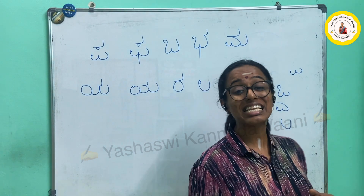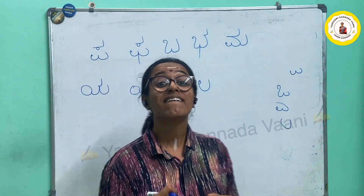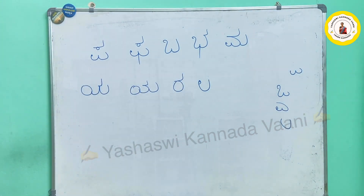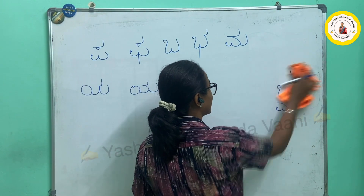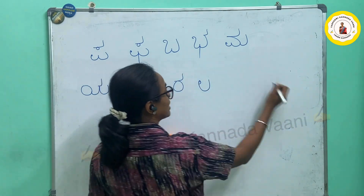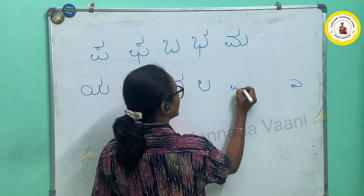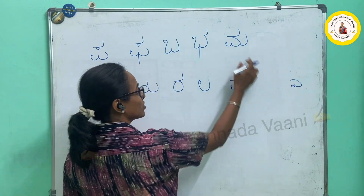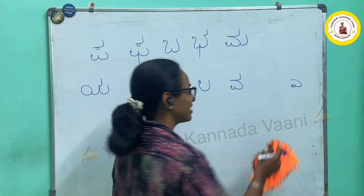Next one is letter VA. How do I write letter VA? It's very simple. Remember the letter A — write letter A, put a TALYA. So if you put extra it will become MA, or else it is a VA. Clear?